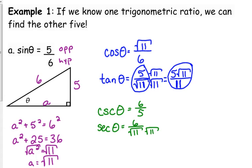Again, if you want to put it in rationalized form, that would be six times the square root of 11 over 11. And cotangent is the reciprocal of tangent. I'm going to go back to the original one, the square root of 11 over five.